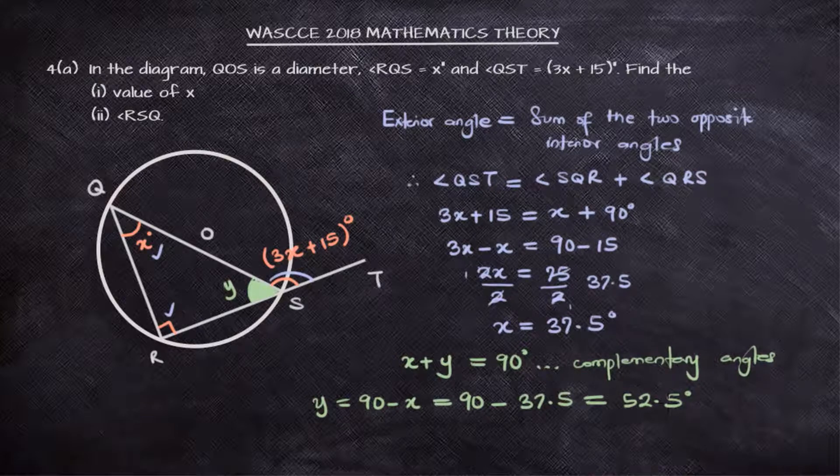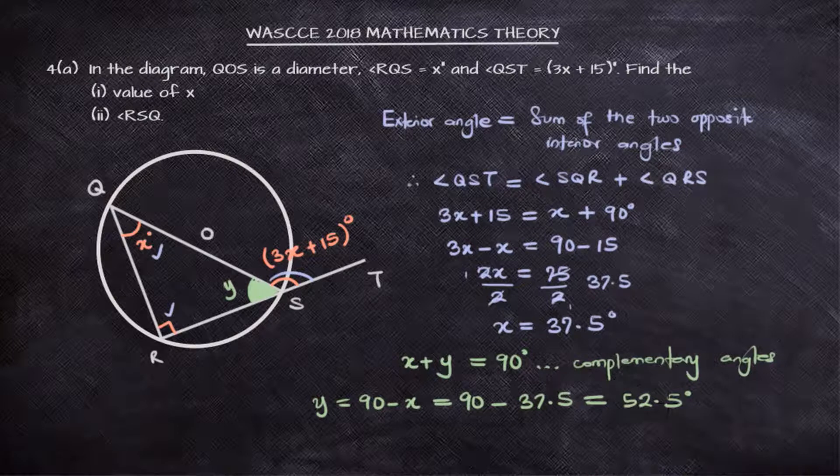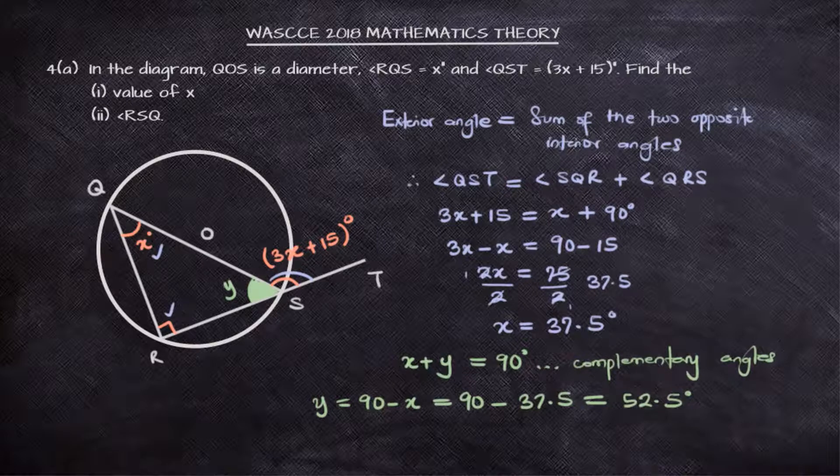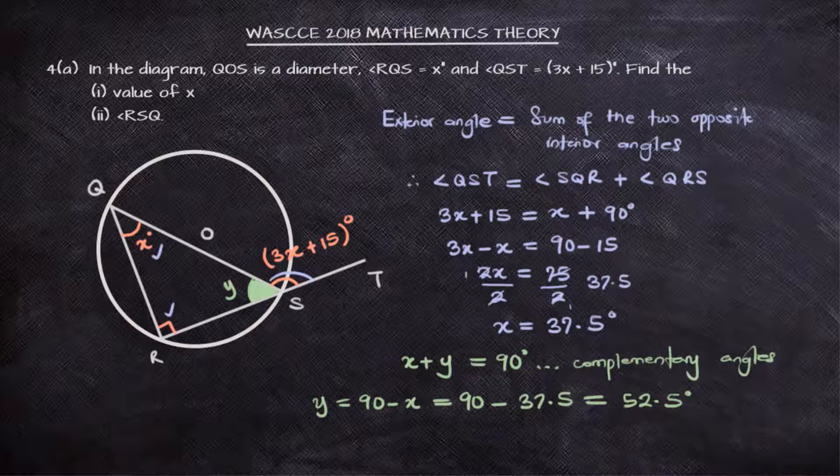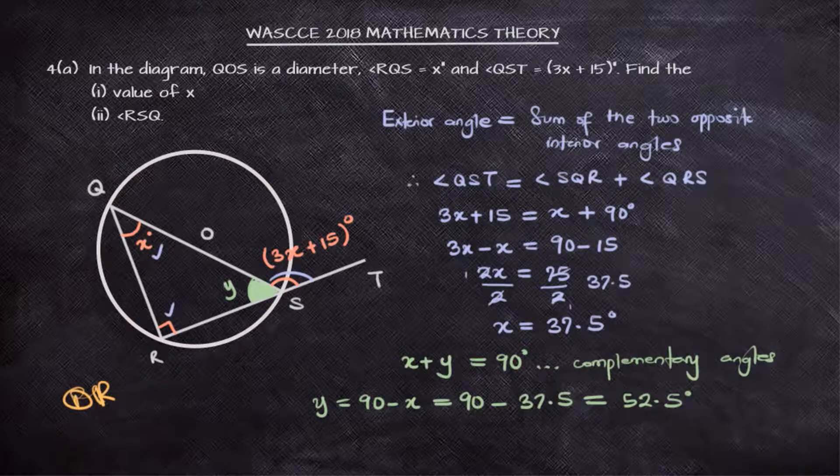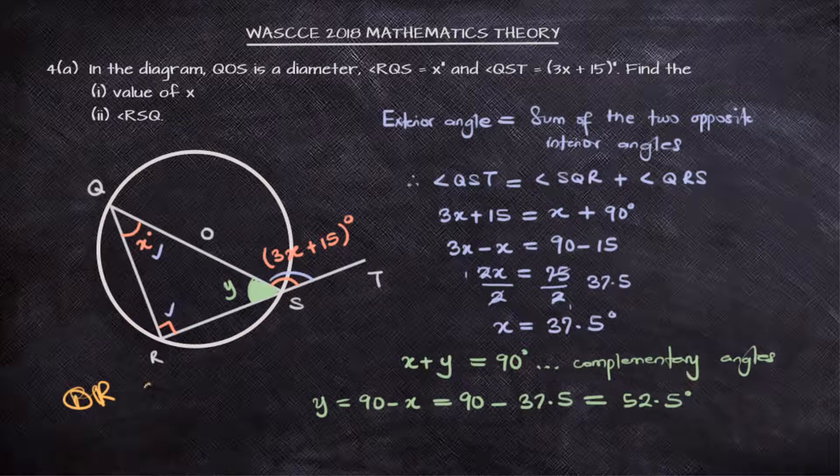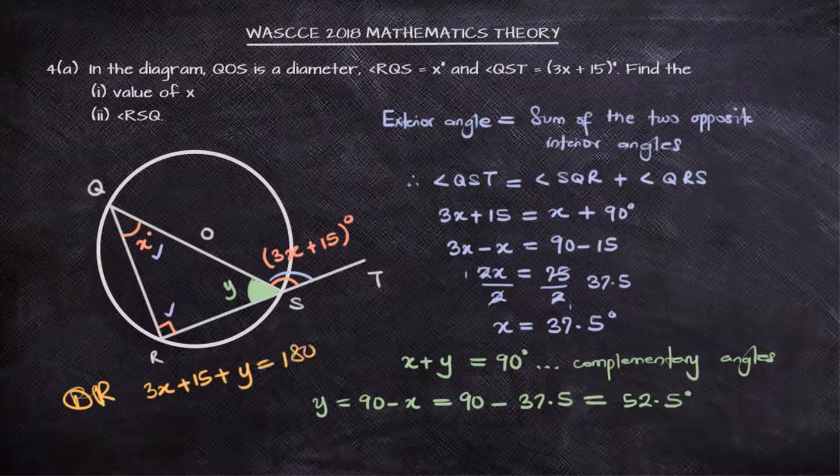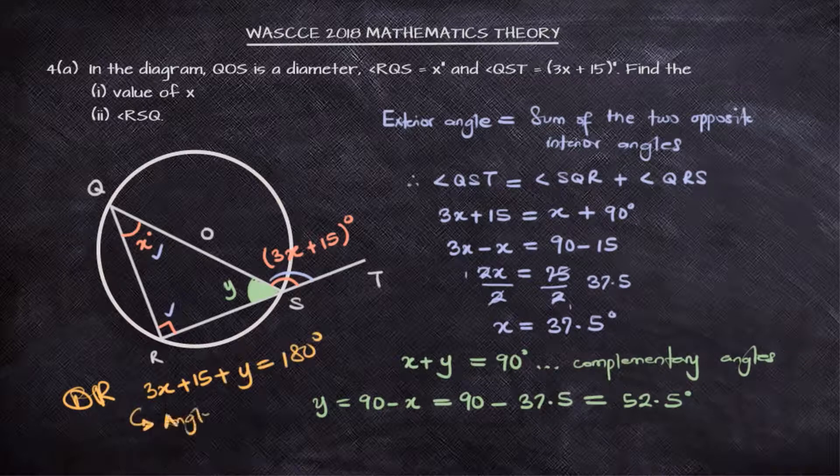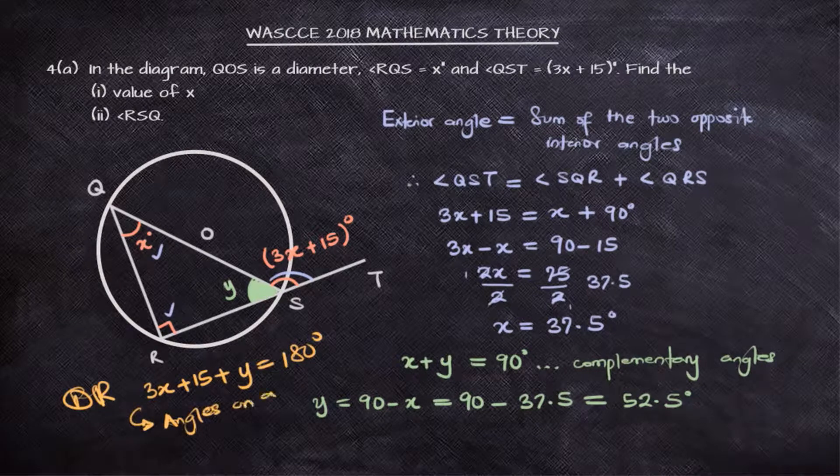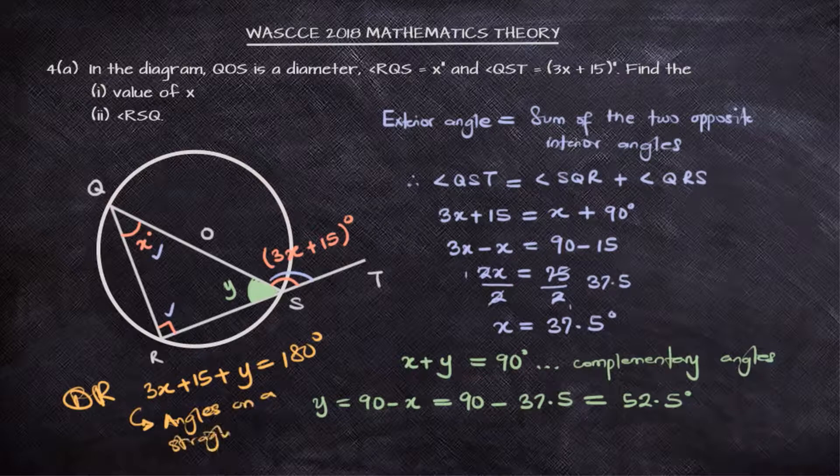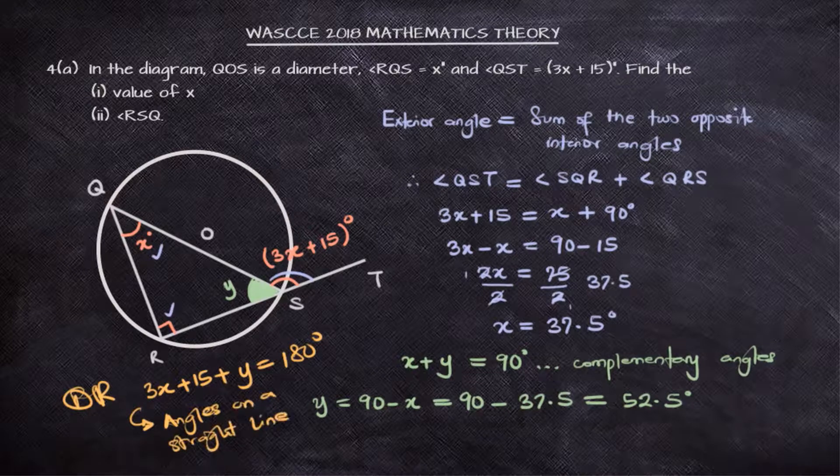Alternatively, to find the value of Y, for example, I can consider the line RST. And from the line RST, I can bring in the equation of a straight line, which is sum up to 180 degrees. So, I can say from the line RST, 3X plus 15 plus Y is 180 degrees, and that's because that's the sum of the angles on a straight line. And I will still get the same solution to the problem.